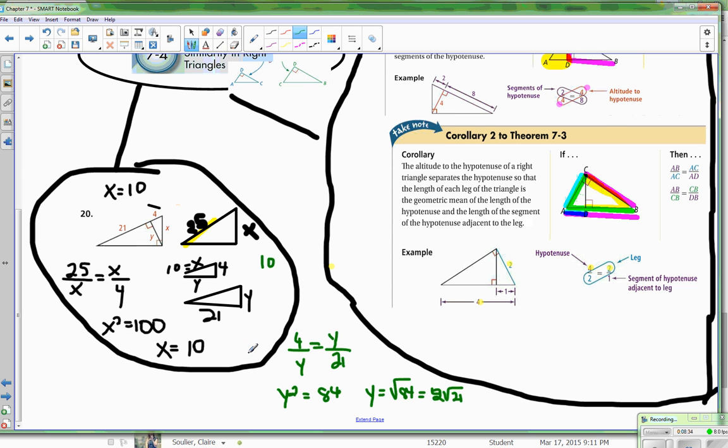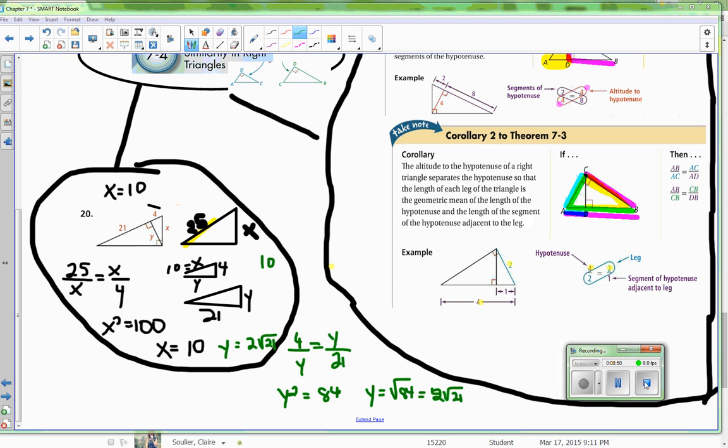All right, so Y is equal to 2 root 21. 21 doesn't have a perfect square living inside of it. It is 3 times 7, neither 3 nor 7 is a perfect square, so we are done.